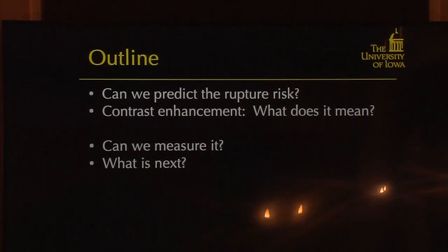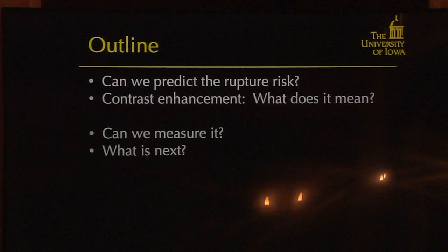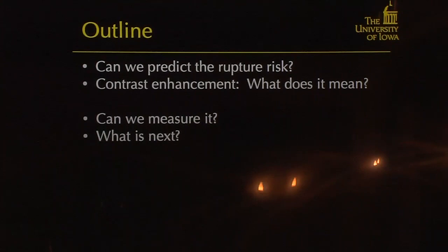There is a lot of literature showing that contrast enhancement of the aneurysm might be a sign that it is close to rupture. What does contrast enhancement mean? Can we measure contrast enhancement — the signal intensity of the enhancement of the aneurysm — and what's next?